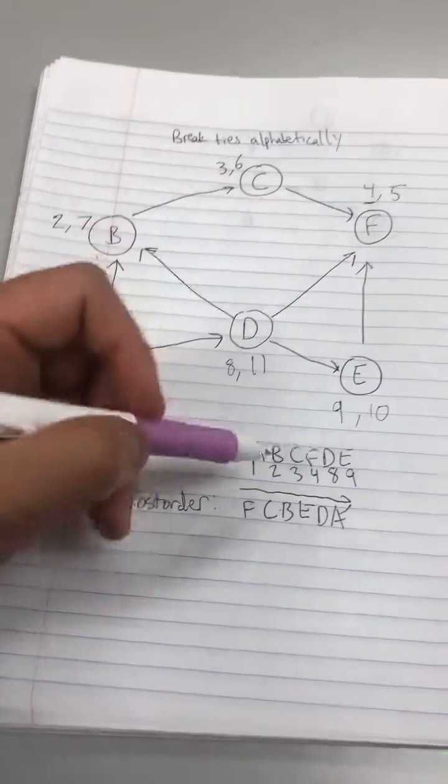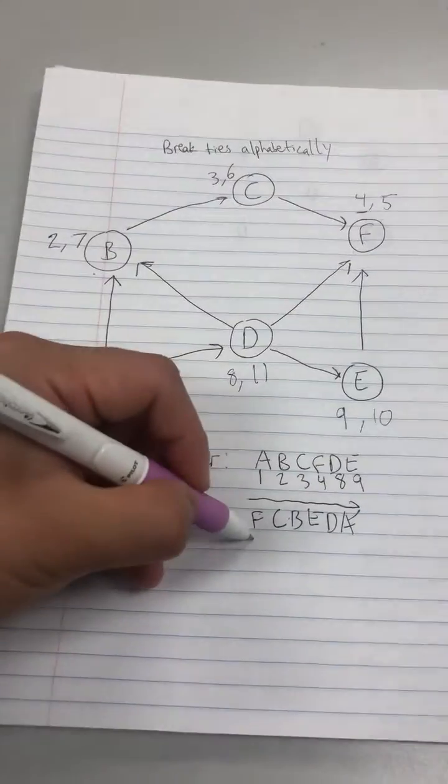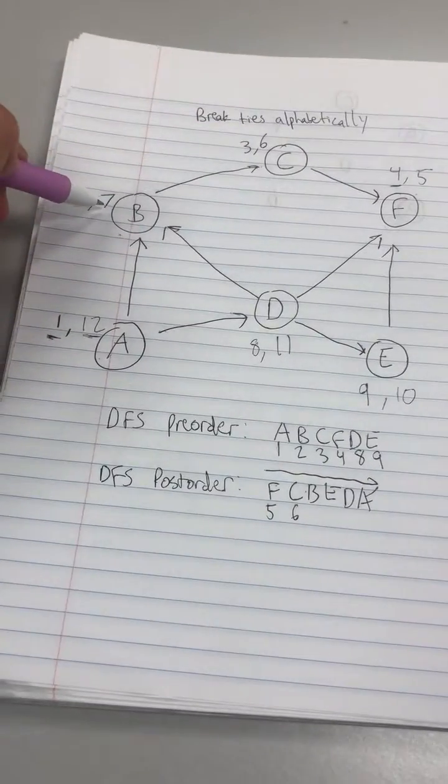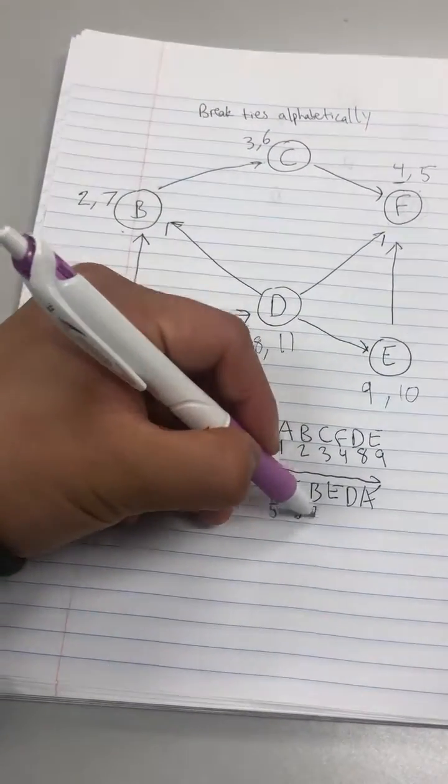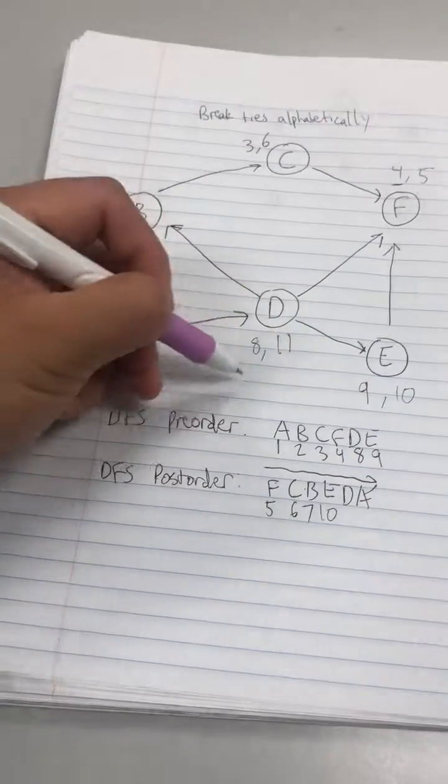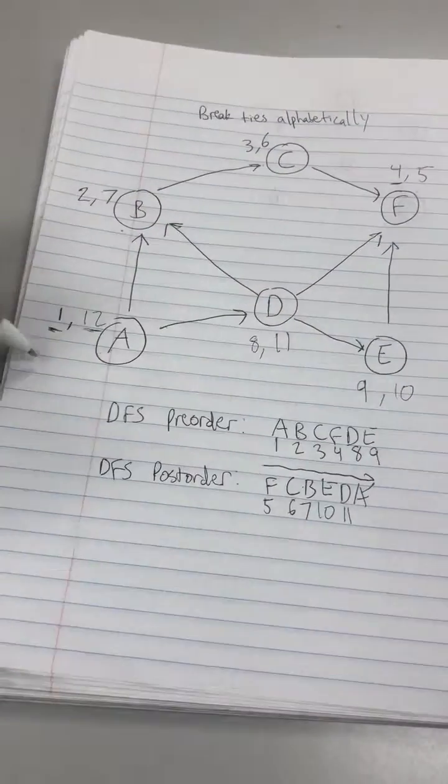Once again I'll write down the numbers. So F is five here, C is six, B is seven, E is ten, D is eleven, A is twelve.